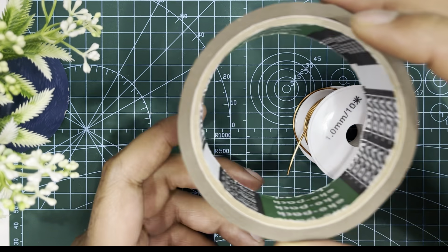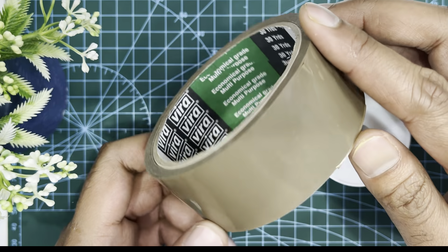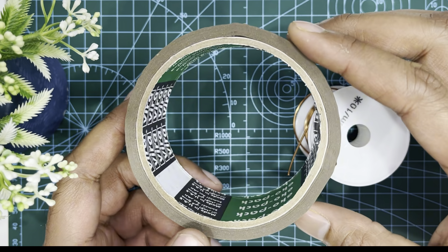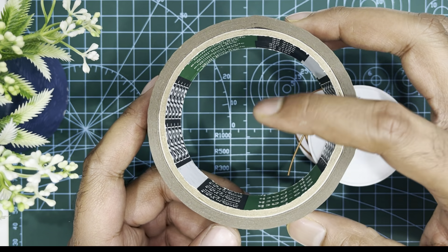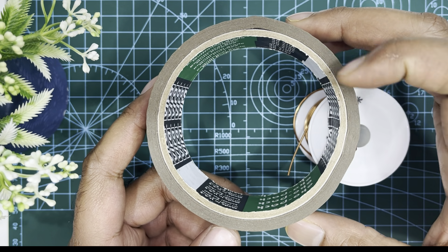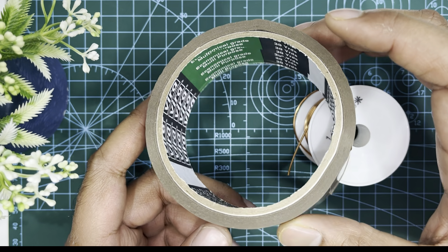For making the coil, you can use any round shape object. Here I have found this tape roll in my room, so I will use it. You can use any circular object having a diameter of 8 to 10 cm.